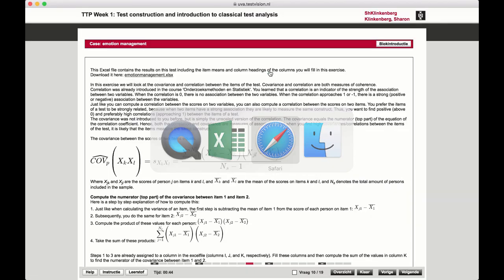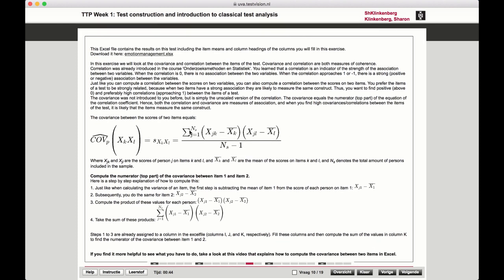Let's go back. What we first have to do is calculate the sum of the multiplication of the scores for a specific person on one item minus the mean of that item, multiplied by the score of that same person on the other item minus the mean of that item.